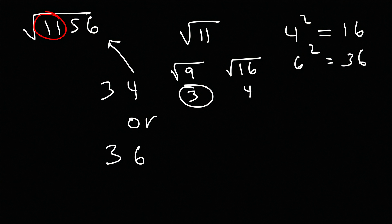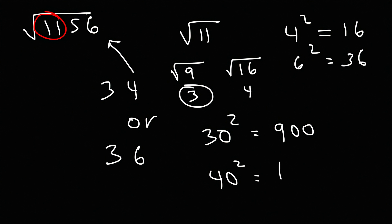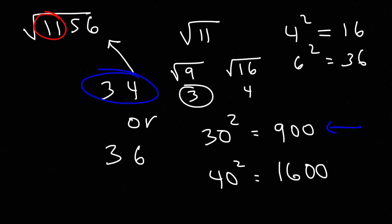The question is which one? 30 squared is 900, and 40 squared is 1600. Since 1156 is closer to 900 than to 1600, we pick the smaller of the two values, which is 34. This is the answer — 34 squared is equal to 1156. If you multiply 34 by 34, you'll get 1156.